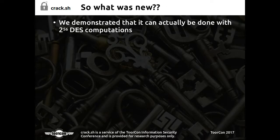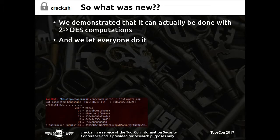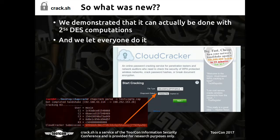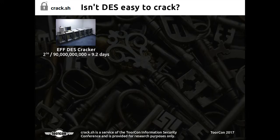We demonstrated it could be done in 2^56 DES computations, and the key thing is we made it so anybody could do this, not just governments. Moxie released a program called chapcrack that you point at a pcap file, it extracts the information to create a token you submit to CloudCracker, which goes on to an FPGA cluster. Within 24 hours it sends you the NT hash for that MS-CHAPv2 communication — supporting PPTP VPNs and WPA Enterprise.